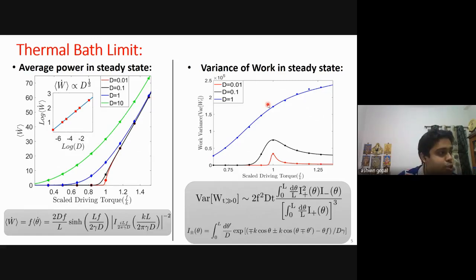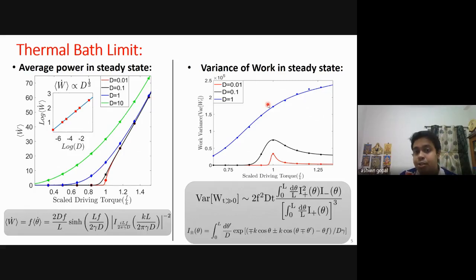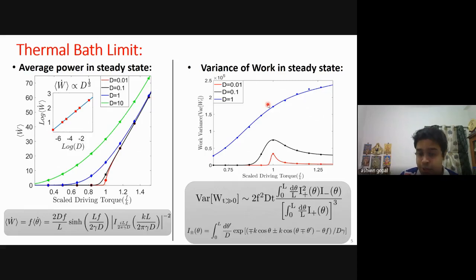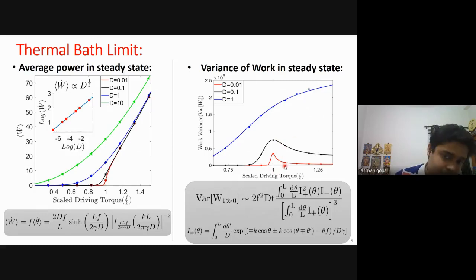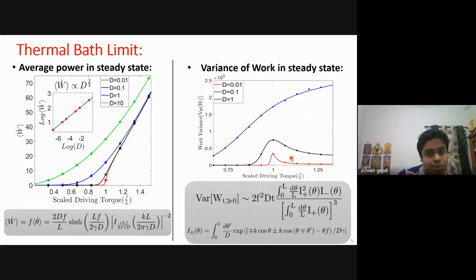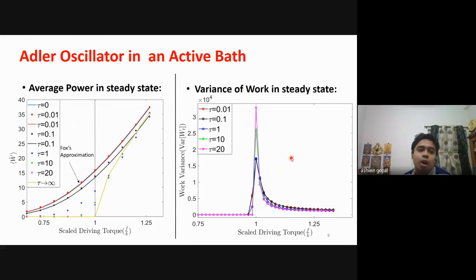These peaks in the variance correspond to the sum of two contributions governed below and above the bifurcation. Below the bifurcation, the system is diffusing around an equilibrium point, so variance is governed by the diffusion coefficient. Above the bifurcation, the system oscillates alongside diffusion, so variance is governed by all parameters in the system. These two different variances account for a peak near the bifurcation, and the analytical results match well with the simulations.